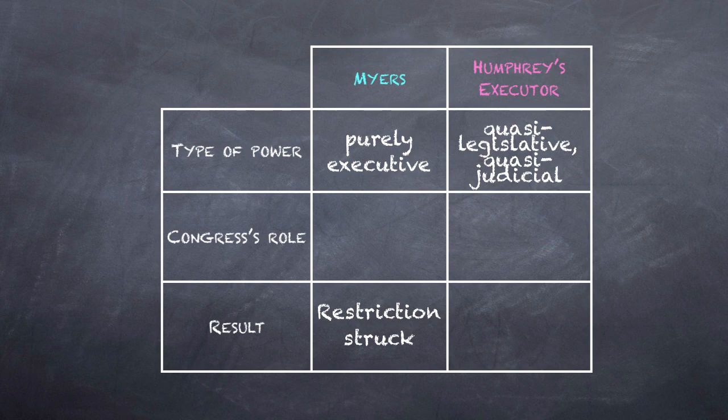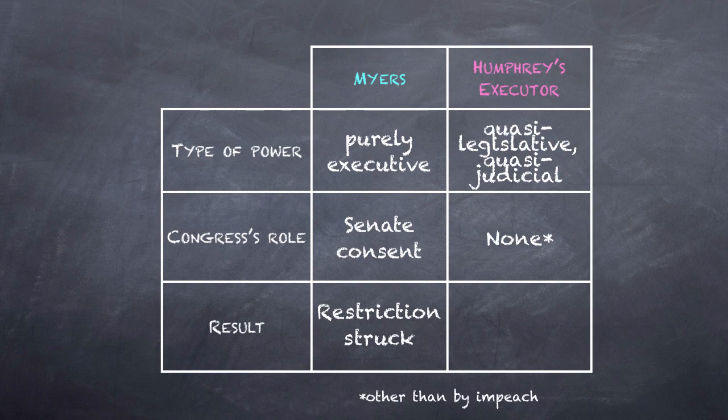For her part, Morrison urged the court to distinguish Myers. In Myers, the statute had given the Senate a role in the removal process. In contrast, the Ethics in Government Act, like the FTC Act and Humphrey's Executor, allocated no role to Congress in the removal of an independent counsel. Therefore, Humphrey's Executor should be followed and the act upheld.